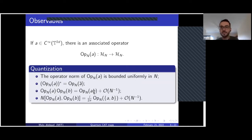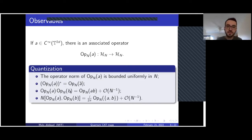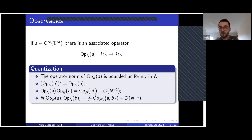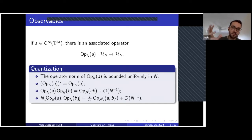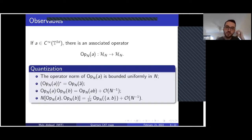Something interesting: you know that your observables are commutative — multiplying two functions is commutative — but multiplying two operators is not. When you do this quantization procedure, at first order you get something resembling multiplication, meaning when you compose two pseudo-differential operators you get the operator corresponding to the product of your observables, but with an error term. You want something that turns commutators into Poisson brackets. This is one way to see that in the semi-classical limit you get something reminiscent of classical dynamics, because the Poisson bracket induces Hamiltonian dynamics.